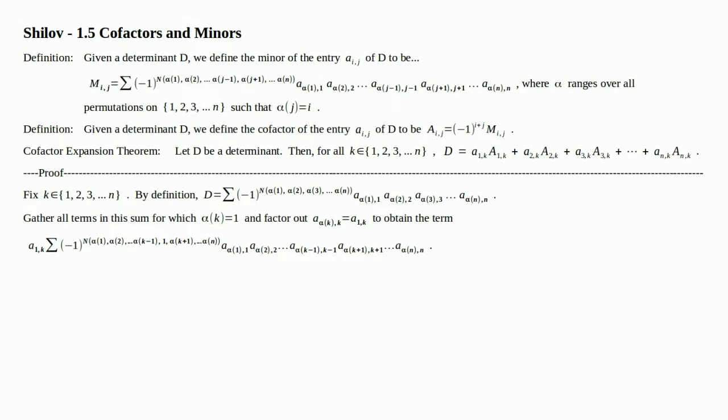Gather those terms and factor out A sub 1K to obtain the term A sub 1K times the rest of all those gathered terms. Bear in mind that that summation is not the full determinant — it is a sum of all terms for which alpha of K equals 1. The determinant has many terms; not all of them will have A sub 1K in it, but we gather the ones that do and factor A sub 1K out. Notice that we have factored A sub 1K out: there's A sub alpha(K−1), K−1, and then A sub alpha(K+1), K+1 — what should be in the middle is A sub alpha(K), K, but we factored it out.